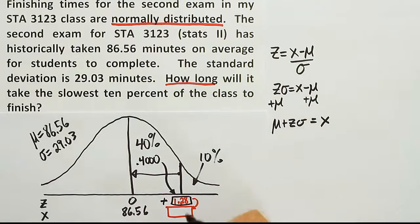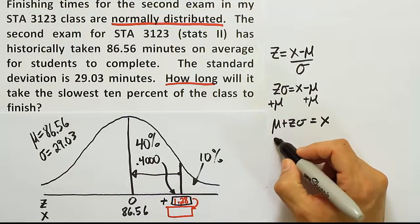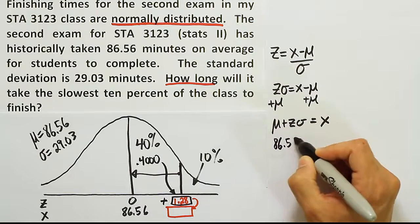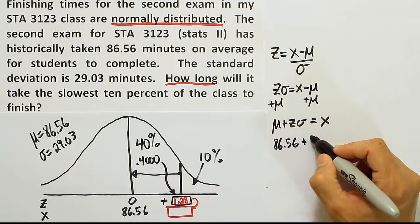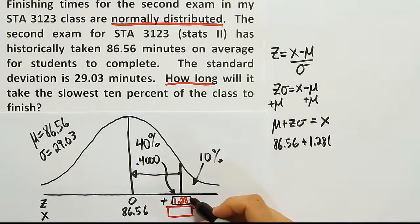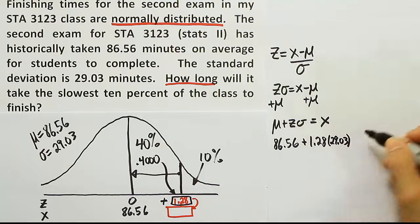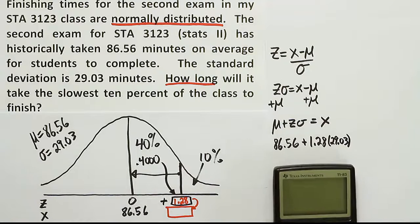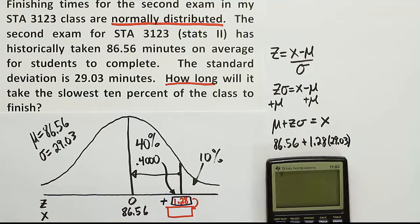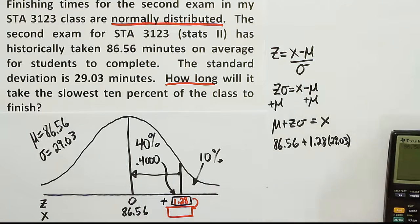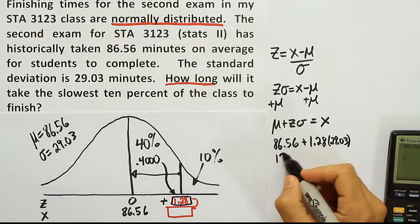So the mean is 86.56 plus the z-score. The z-score we just said was 1.28. We just found that. And then the standard deviation was given as 29.03. Let's enter those things into the calculator to see what we get. So 86.56 plus 1.28 times 29.03. When we do all that, we get a total of 123.7.